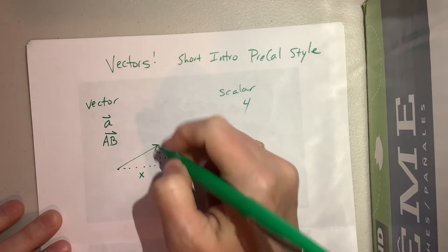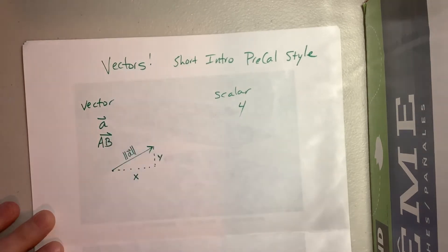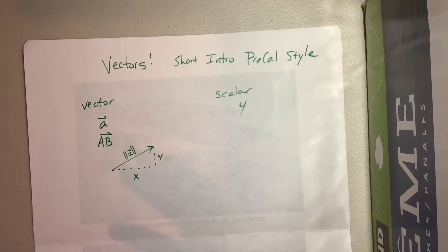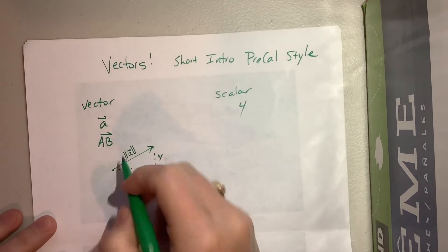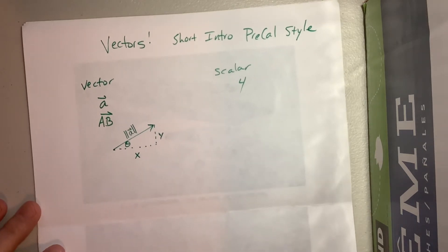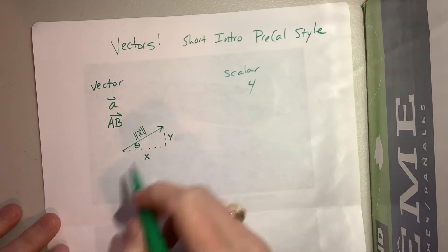This would be its x component, this would be its y component. If this is vector A then we would talk about the magnitude of vector A. Actually in pre-calc they would use double lines and IB we just use one set of lines which is what I've been teaching most recently and then this is that direction.